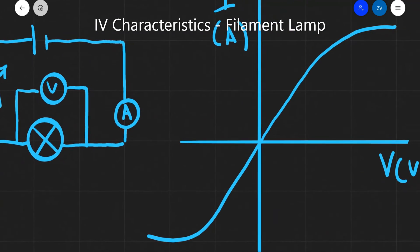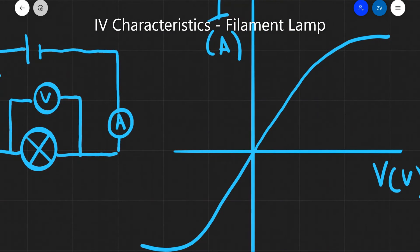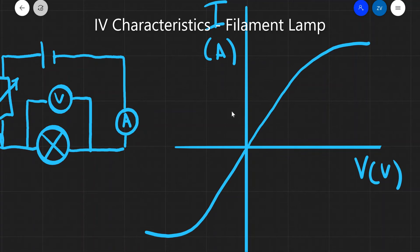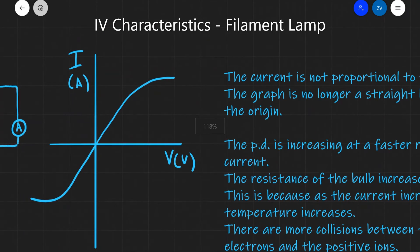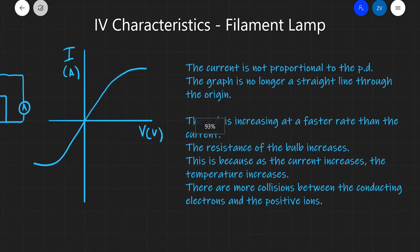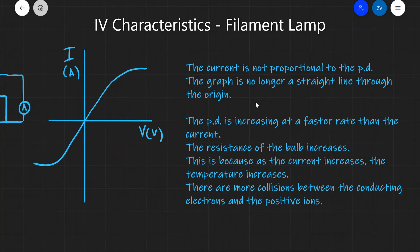The IV characteristics of a filament light bulb look like this. Notice that the graph is no longer a straight line through the origin, which means the bulb does not obey Ohm's law. The current is not proportional to the potential difference, and once again this confirms that the bulb does not obey Ohm's law.